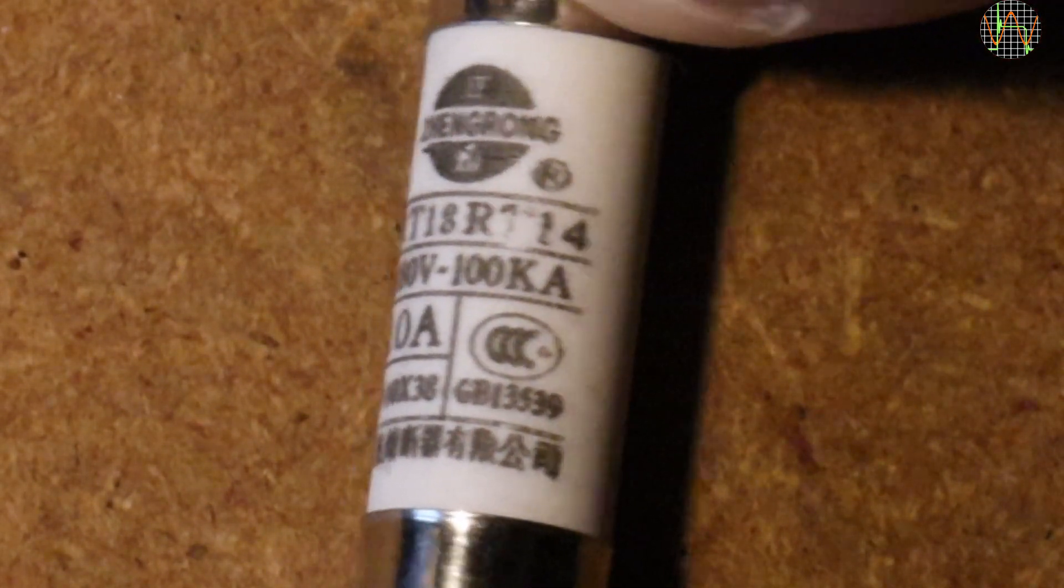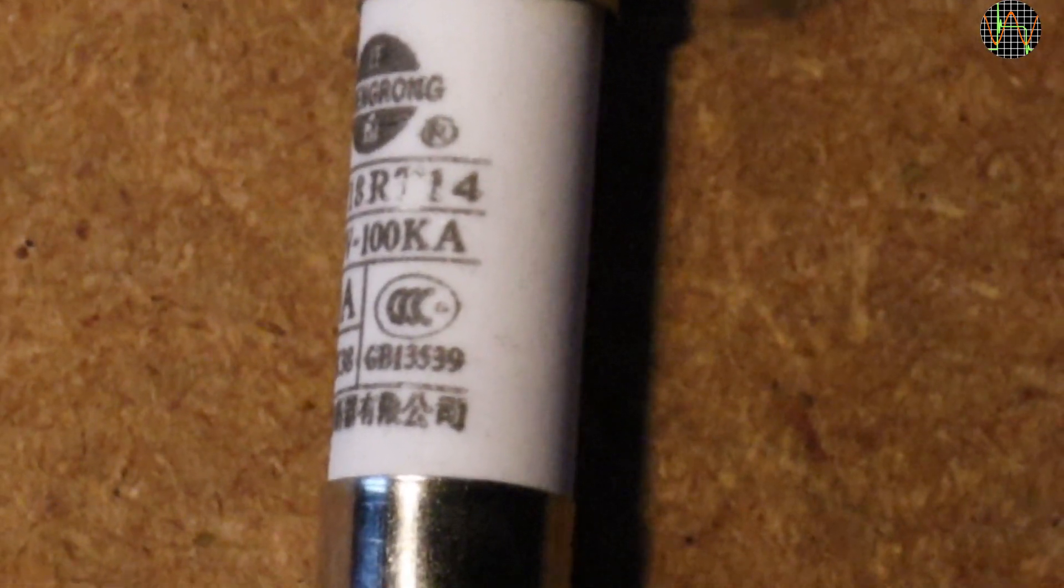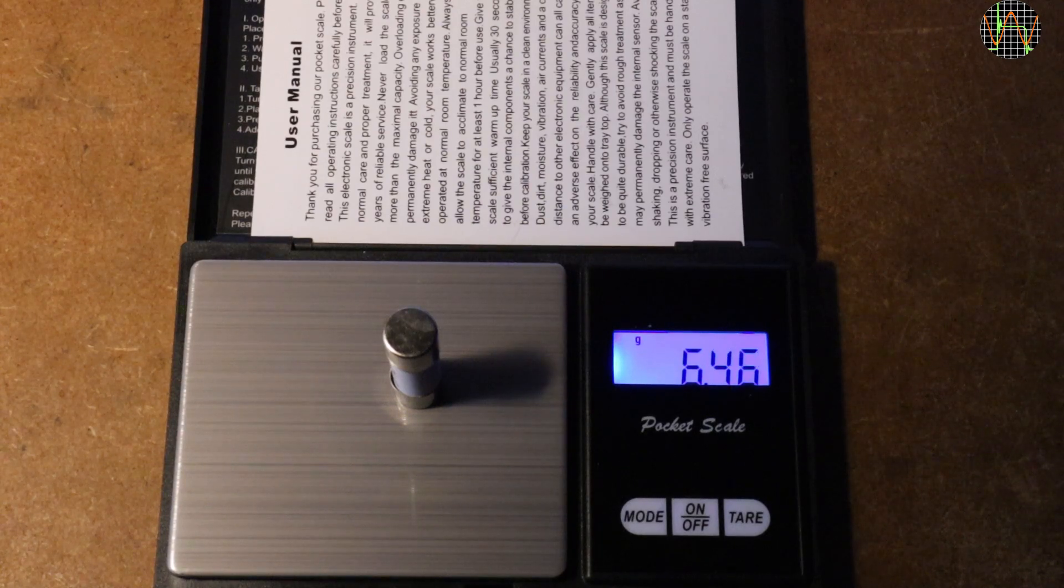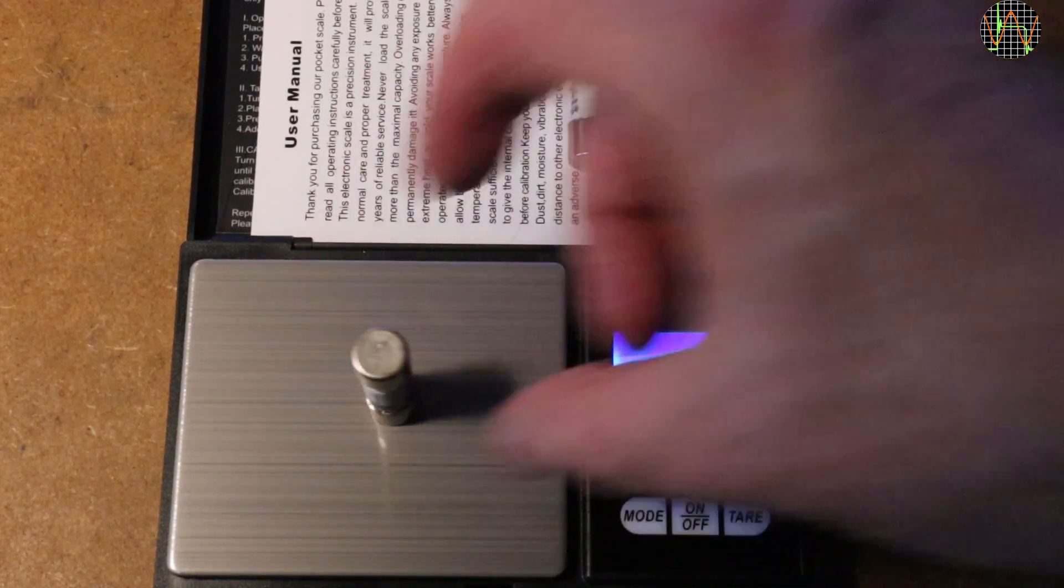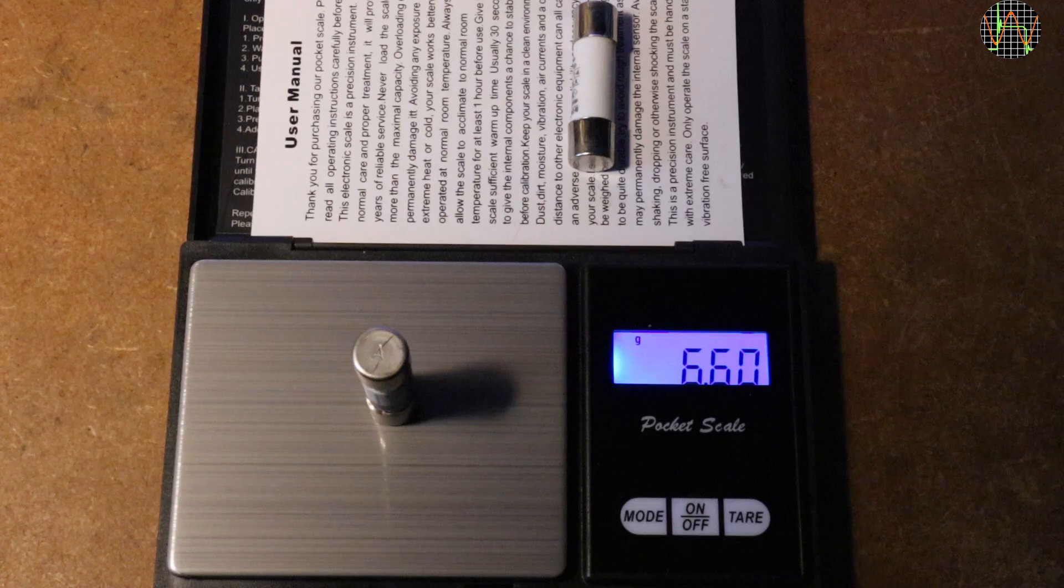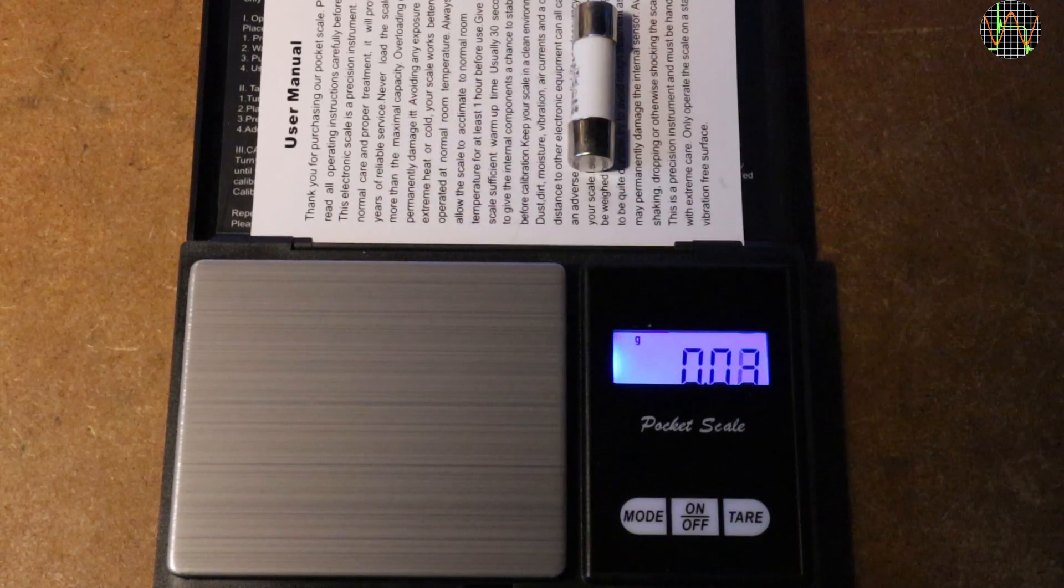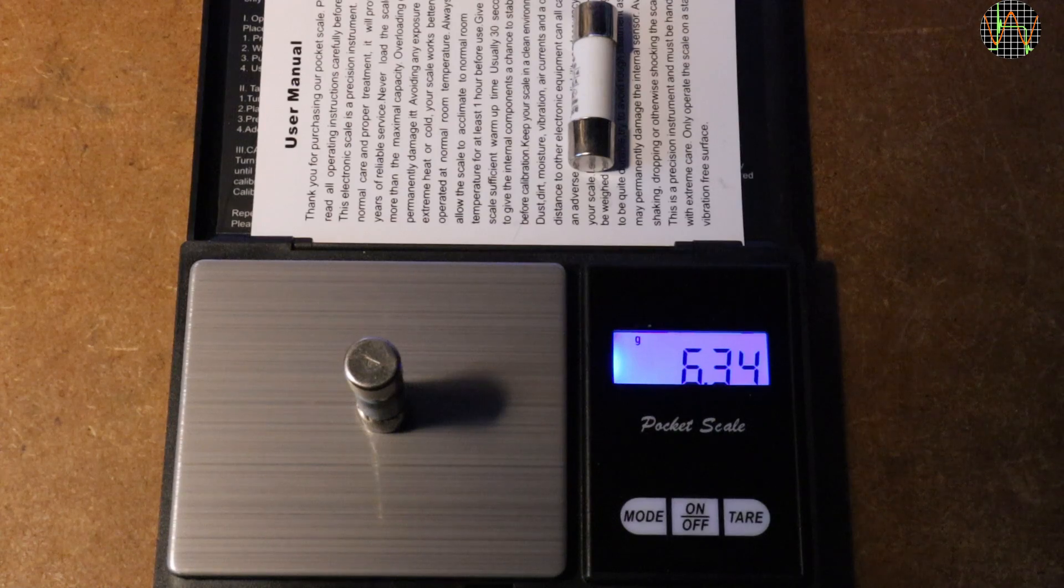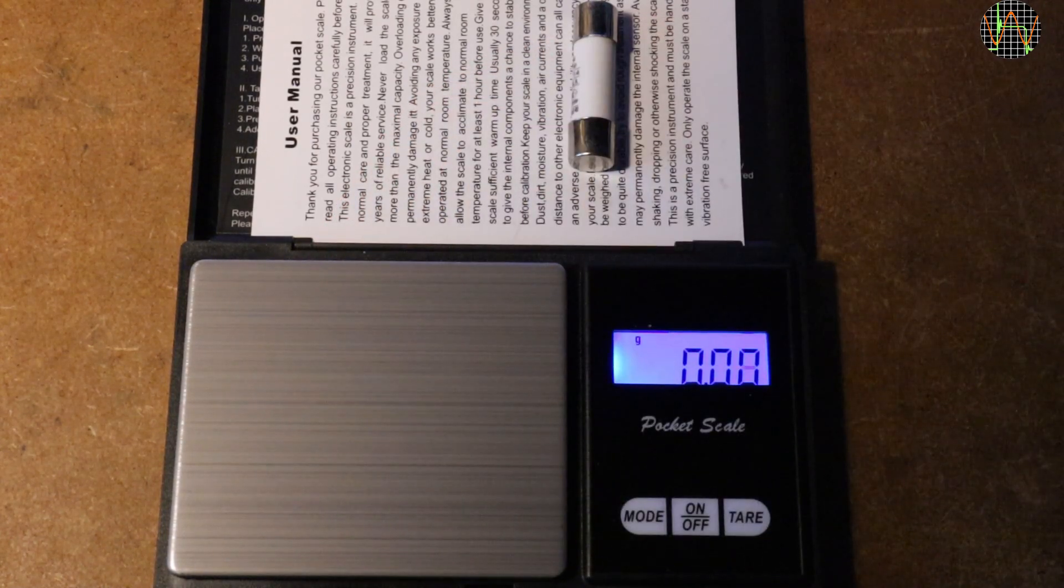Their fuses are available on AliExpress and eBay but I was unable to find the data sheet. On the scale, the Zeng Rong reads 6.46g, a Busman 10A fuse reads 6.6g and another Busman 6.34g, nicely bracketing the Zeng Rong so it seems genuine enough.